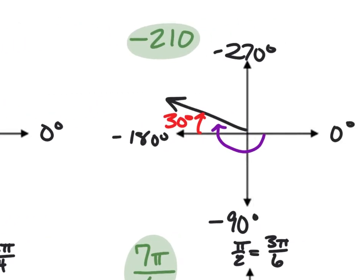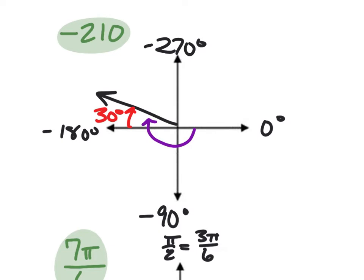For negative 210 degrees, I look at 0, negative 90, negative 180, and negative 270 since I'm going in the negative direction. 210 degrees is a little bit beyond 180 — specifically 30 degrees beyond 180. So going the clockwise direction, negative 210 degrees is 30 degrees beyond negative 180.